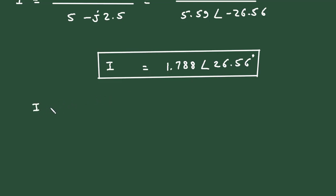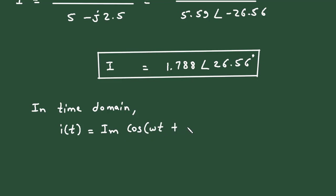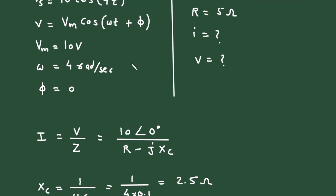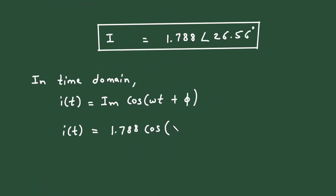In the time domain we can write I(t) = Im cos(ωt + φ). So I(t) = 1.788 cos(4t + 26.56°) Amperes.